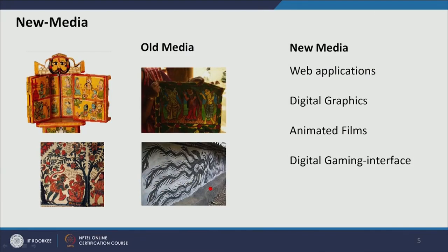On this side we have traditional old media. I have selected Indian traditional media — for example, this first one is a covered painting of a wooden shrine from Rajasthan. They used to tell a story through folded wooden panels. Gradually one wooden panel would unfold, a narrative with a song attached to each painting would be delivered, then they would unfold another panel and the next song would start.